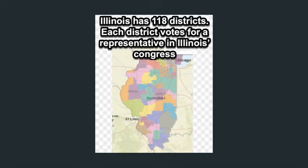Hey guys, let's learn about how things work super briefly and about our assignment this week and next week. Illinois has 118 districts or sections — 118 little sections. The whole state is carved up into 118 little pieces, and each district or section gets to vote for a representative.